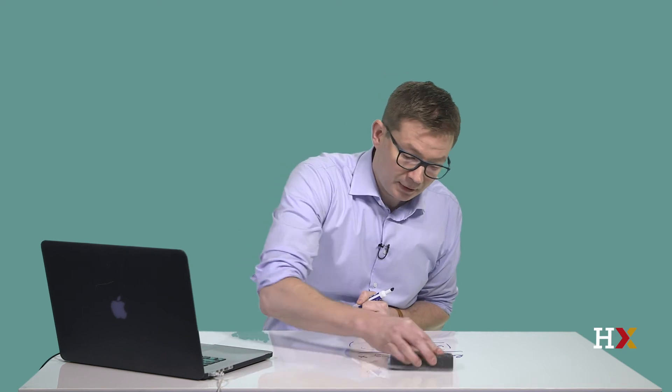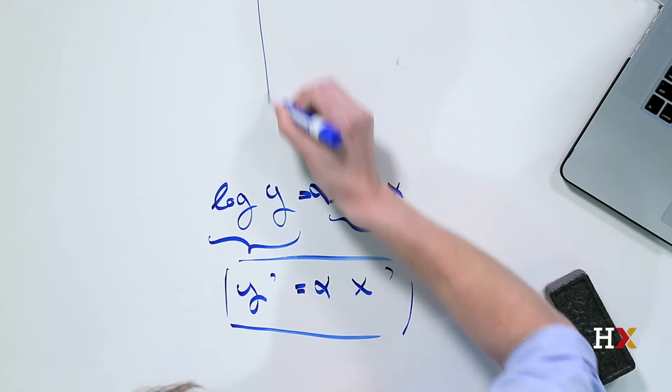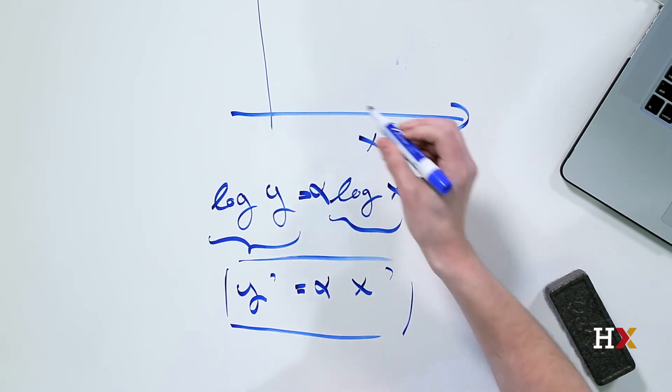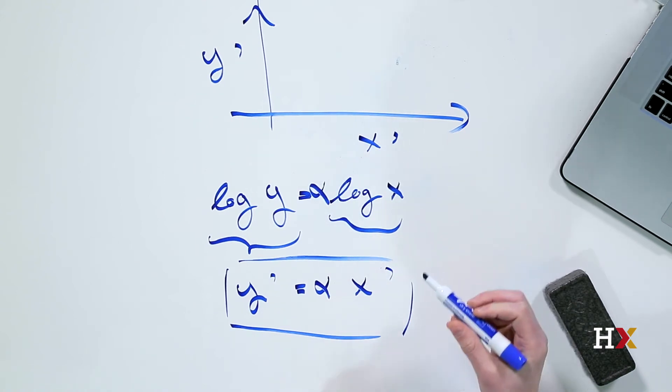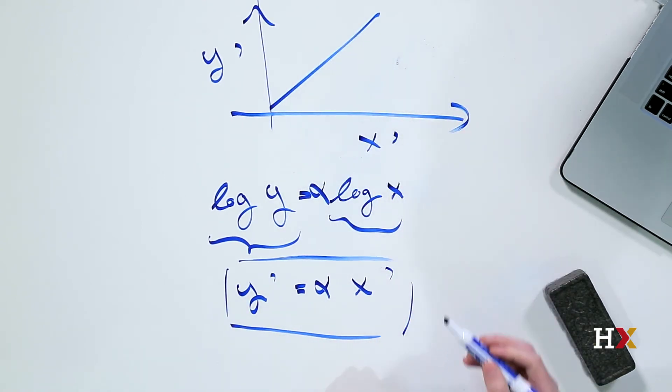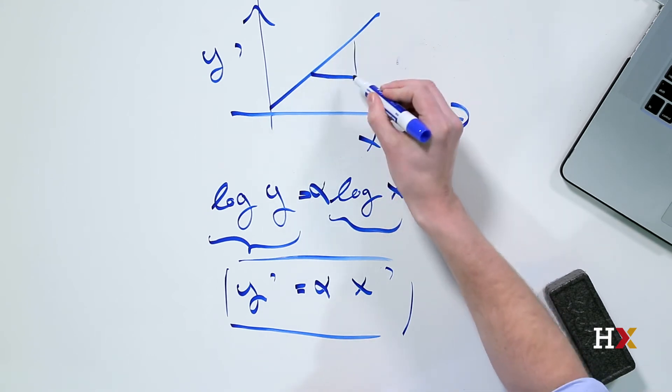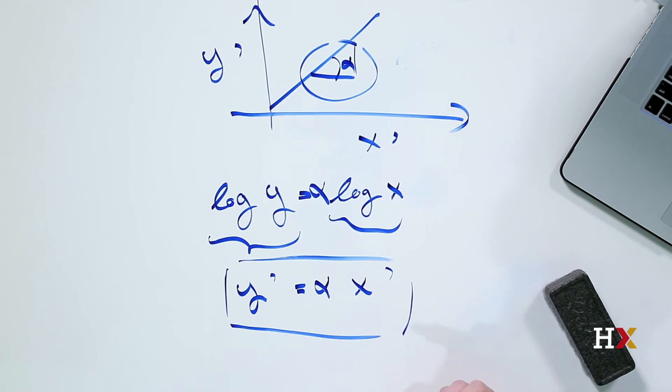So let's look at this as a plot. We have our new axes here. We have our x prime and we have our y prime here. The shape of this function is going to be simply a line that looks like this. In this case, alpha is going to be given by the slope of this line.